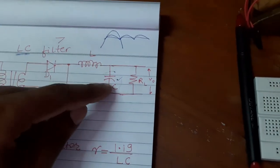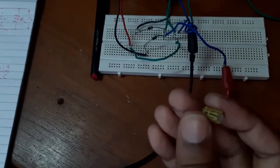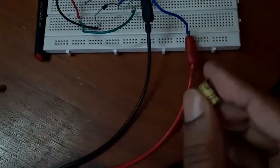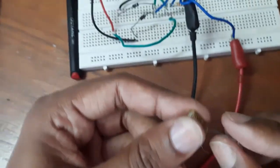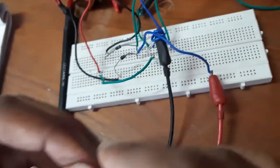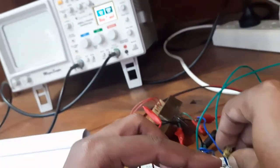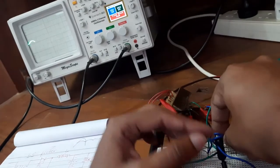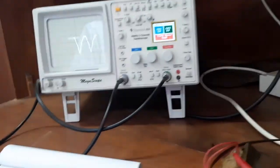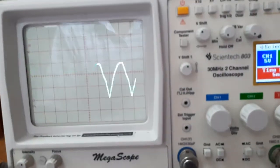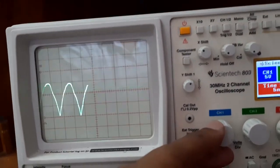Now we will connect an extra capacitor — a 22 microfarad capacitor — across the resistor. Just see how the waveform changes. The negative is marked on the capacitor and the other lead is positive. After connecting it across the resistor, see what happened to the ripple — see how much it decreased. It is almost like a flat line; it has reduced to a very considerable extent.